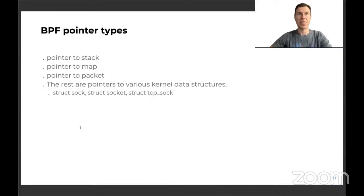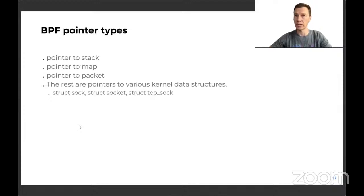There are four main classes of pointers. The first three were natural for the verifier to recognize and validate. The fourth category is very broad — verifier support was added for struct sock, socket, TCP_sock, but there are lots of other kernel data structures. Clearly this approach does not scale. BTF type format came to solve this problem: it allows all kernel data structures to be recognized and memory accesses to be proven safe.